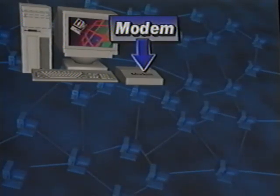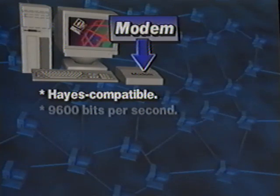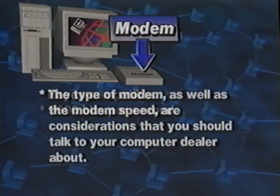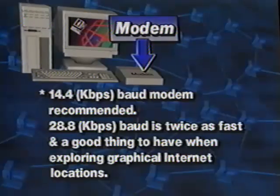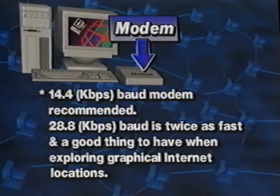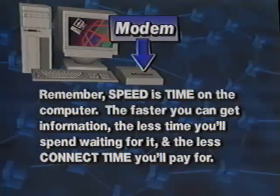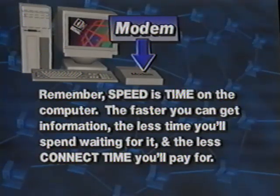A modem allows the computer to translate its data into a signal that can travel over a standard telephone line to talk to another computer. You will need a Hayes compatible modem that runs at least 9600 bits per second. It's recommended to have at least a 14.4 baud modem; a 28.8 baud is twice as fast and a good thing to have when exploring graphic-oriented programs on the internet. Remember, speed is time on the computer. The faster you can get information, the less time you'll spend waiting for it and the less connect time you'll pay for.